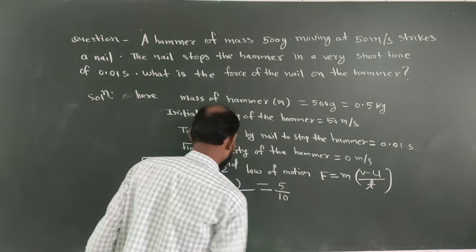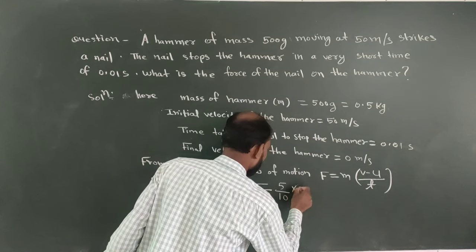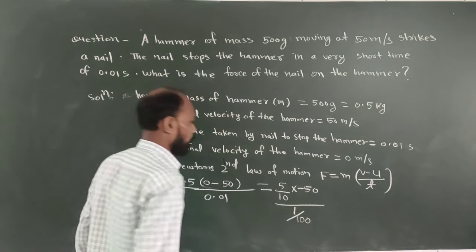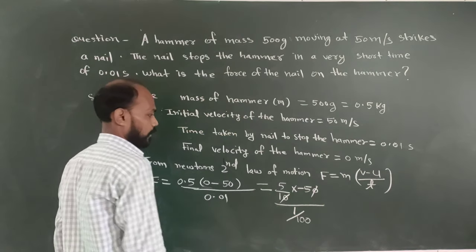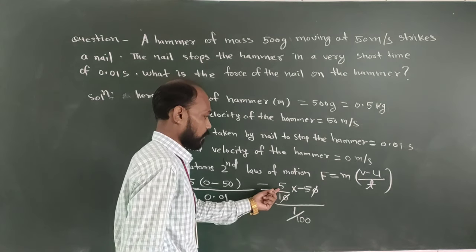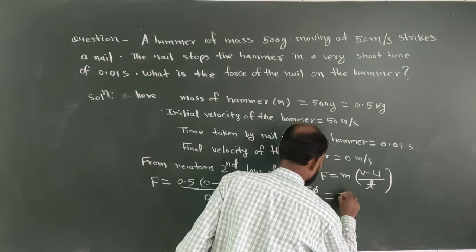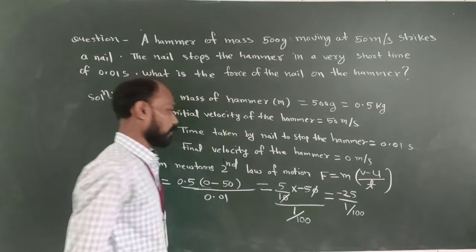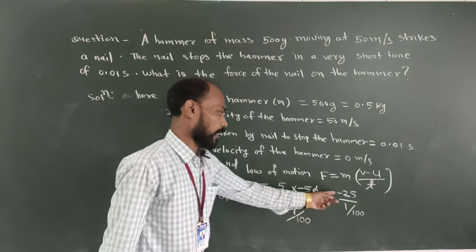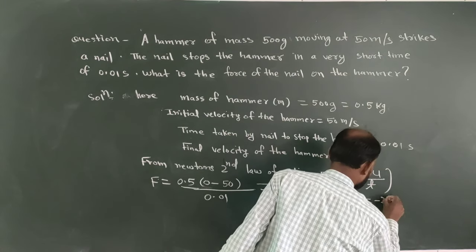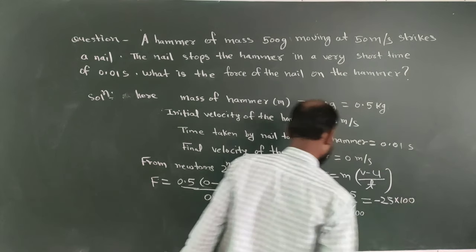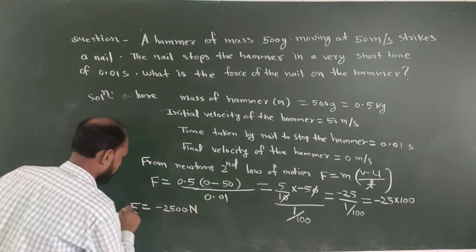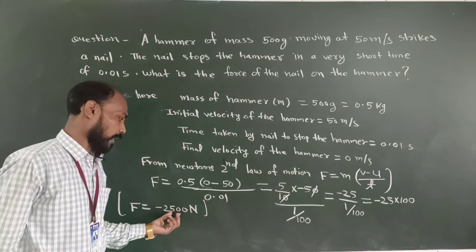Toh hum likh sakte hain: 5 by 10, into minus 50. 0 mein se 50 kya? Yeh ho jayega minus 50. Aur yeh 1 by kya ho jayega? 100. Toh chaliye isko solve karte hain. Yeh 0 aur yeh 0 cancel. Aur yeh ho jayega 5 into 5 equals 25. Toh yeh ho jayega minus 25. Ab minus 25 into 100 kya ho jayega? Toh yeh ho jayega minus 2500 Newton — yeh hai force ka value, minus 2500 Newton.